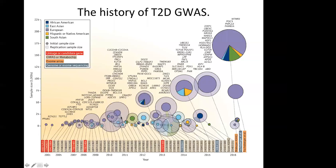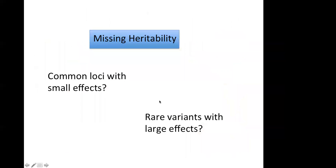Here's a nice overview from the review paper about the history of type 2 diabetes GWAS. You can see that the majority of cohorts is of course European, but increasing numbers of studies with other ethnic backgrounds have also helped identify more loci. The number of loci is still increasing, with new studies coming out as recently as 2016.